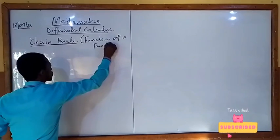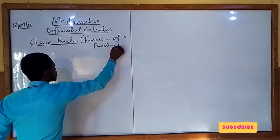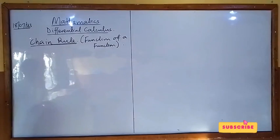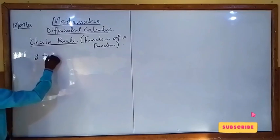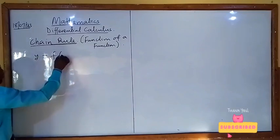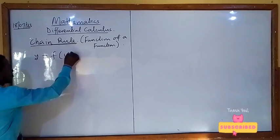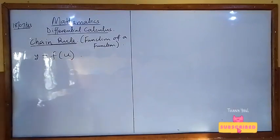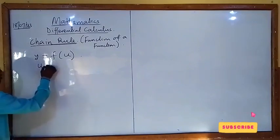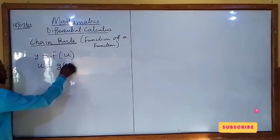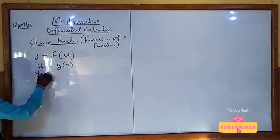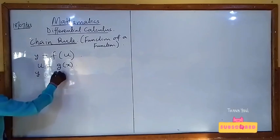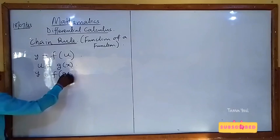Derivative of function of a function leads to the use of the chain rule. What does it mean by function of a function? Given that y is a function of u, and u is also a function of x, we can relate this and write y to be equal to f of g of x.